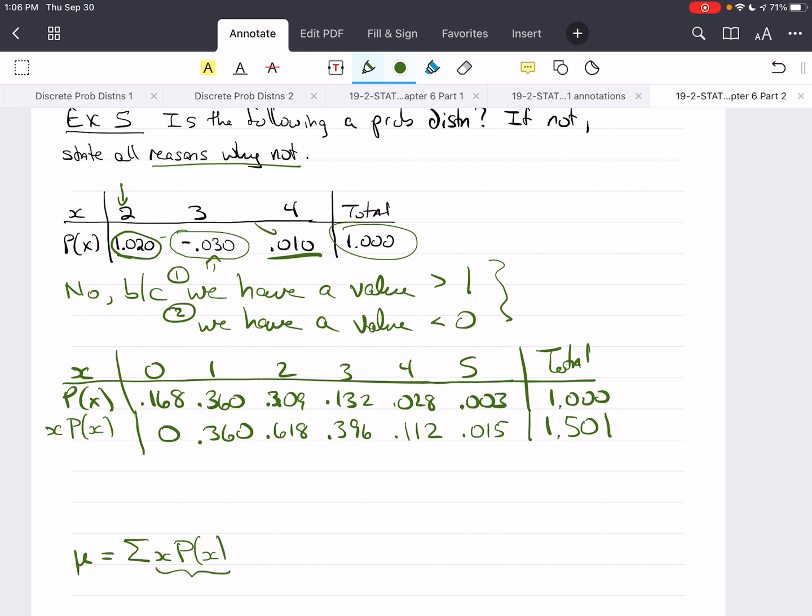Now, remember that this is called the expected value, this is the mean, but it's also the expected value of x. So, an expected value means the value that you expect to get. And this is saying that you expect to get a value somewhere between 1 and 2. And if we look, the highest probabilities that occur here are between 1 and 2, or at 1 and at 2. So, it makes sense that our expected value, or our mean, is going to be somewhere between these two numbers. So, mu is equal to 1.501.